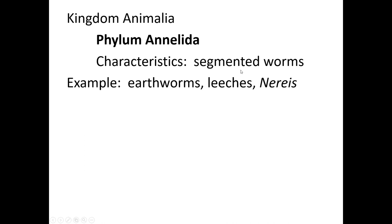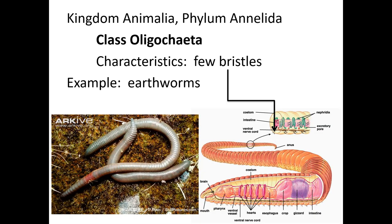Next up, annelids are segmented worms — their body has repeating segments. The classic example is an earthworm. This is our first group where we go down to class in the table. Earthworms are in phylum Annelida, class Oligochaeta. Oligochaeta means 'few bristles' — if you run your fingers from the tail to the head end of an earthworm (the head has a swollen spot called the clitellum), you can feel small bristles along the side. There aren't many of them, but you can feel them.